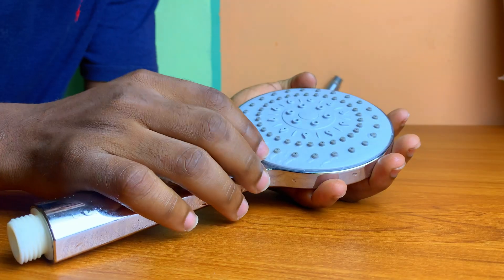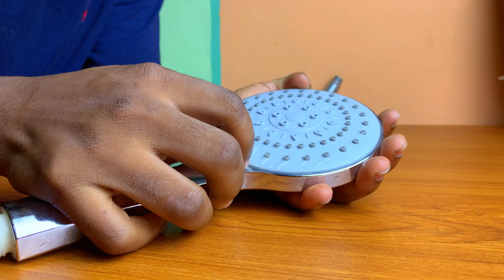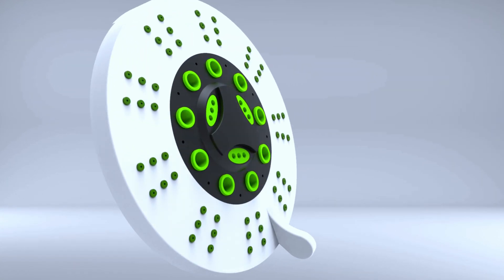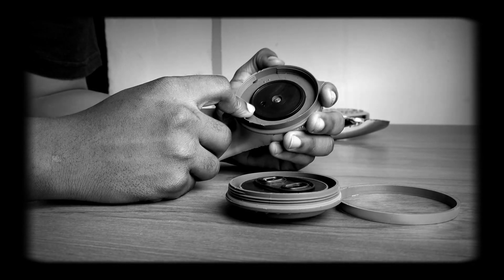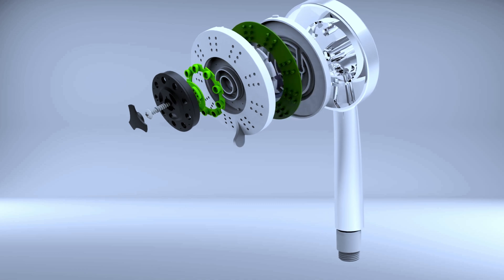A multifunctional shower head allows you to switch between different spray patterns by rotating the lever or dial. Internally, it uses a simple mechanical system to control how water flows through the different nozzle sections. In this video, we'll be peeling off the many layers to see what is hidden inside, understand its functioning and why it is designed the way it is.